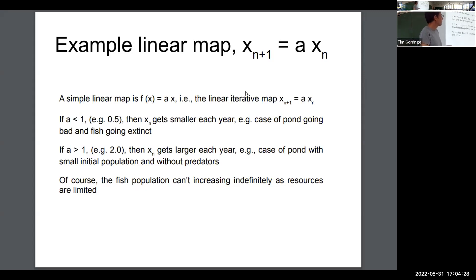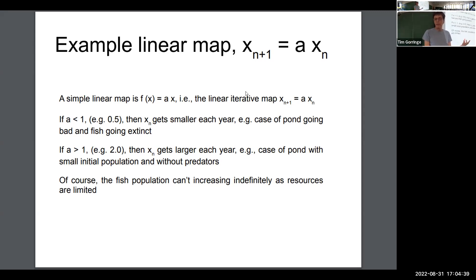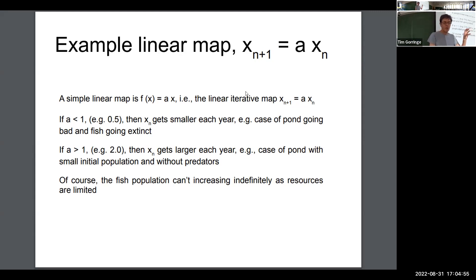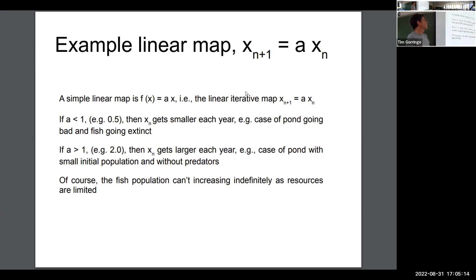Here's the simplest example of an iterative map, where the function is just a linear function: f(x) = a times x. If you're given x₀, the seed, you calculate x₁ by multiplying by a, then calculate x₂ by multiplying by a again, and so on. You can calculate the whole sequence of values of x specified by this iterative map.